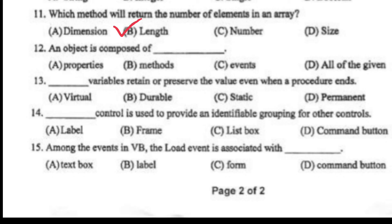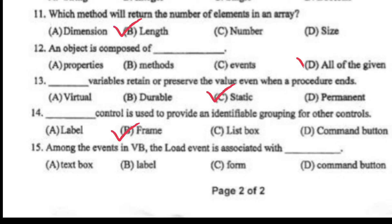Which method returns the number of elements in an array? Length. An object is composed of all of the given attributes. Static variables retain or preserve their value even when a procedure ends. The frame control is used to provide an identifiable grouping for other controls. In VB, the load event is associated with a form.